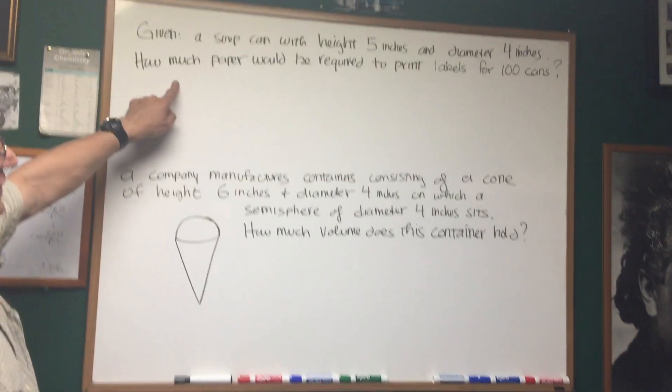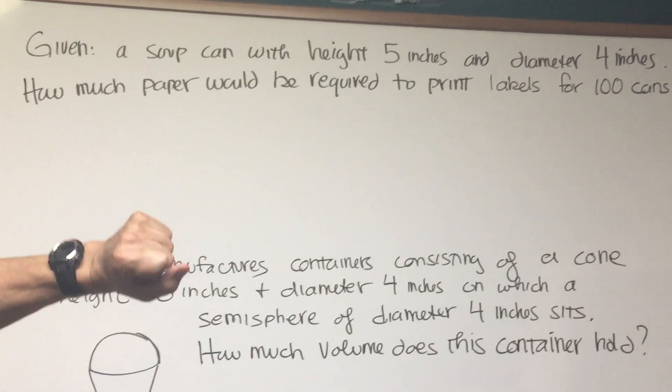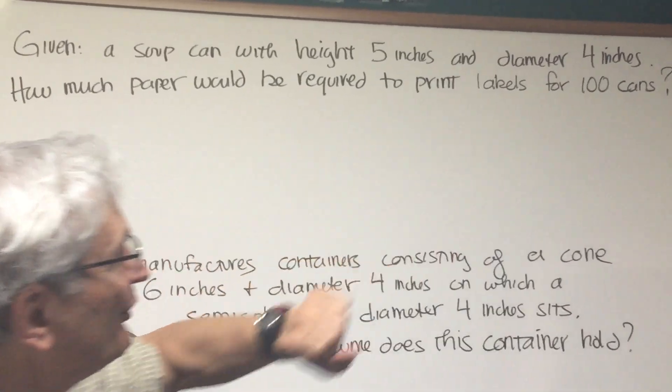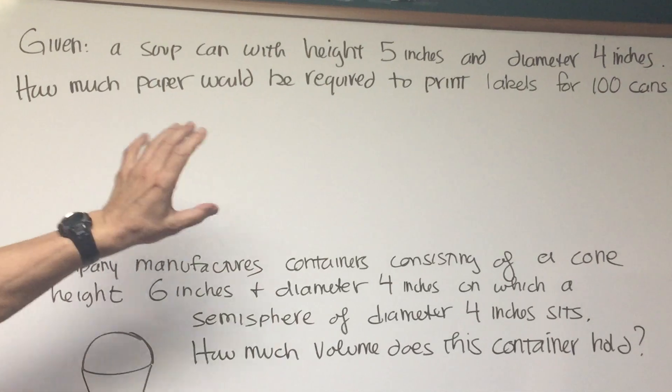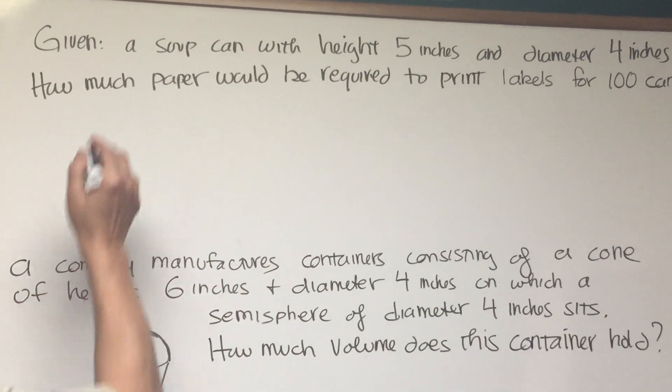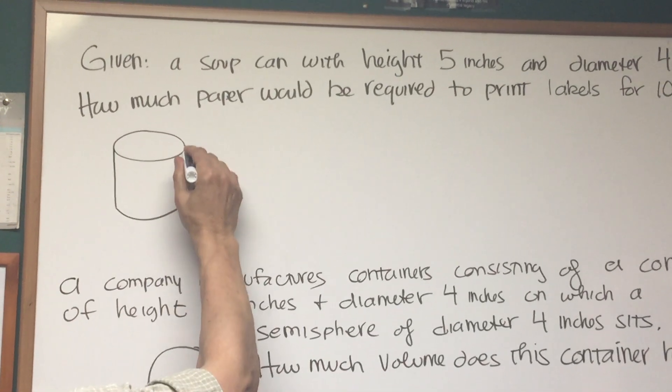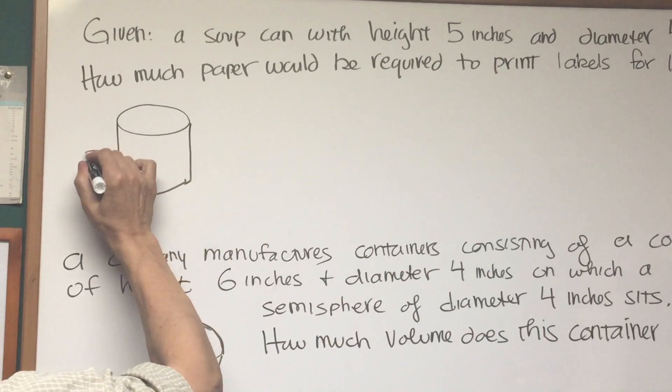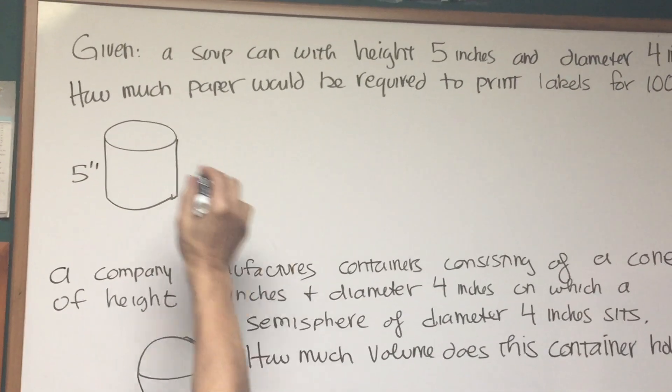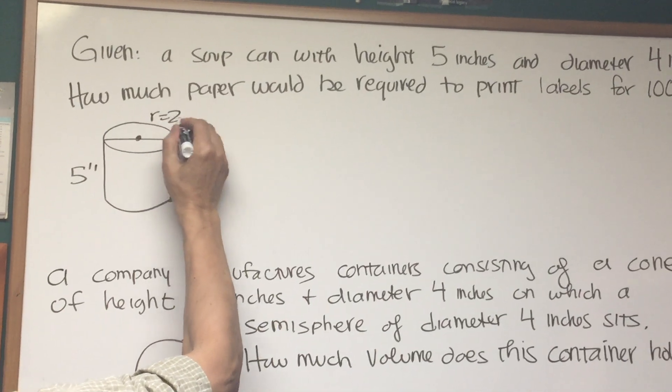Okay, let's do some of these word problems here. This is going to involve a cylinder. Given a soup can with height 5 inches and diameter 4 inches, how much paper would be required to print labels for 100 cans? I think it's good to start off with a diagram. Here is our soup can, and the height is 5 inches and the diameter is 4 inches which means that the radius is 2 inches.